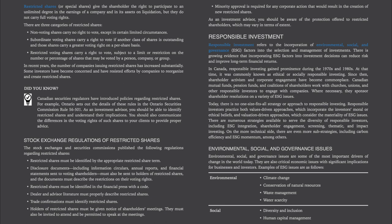Stock exchanges and securities commissions have published regulations regarding restricted shares. These include: restricted shares must be identified by the appropriate restricted share term; disclosure documents including information circulars, annual reports, and financial statements sent to voting shareholders must also be sent to holders of restricted shares and must describe restrictions on their voting rights; dealer and advisor literature must properly describe restricted shares; trade confirmations must identify restricted shares; holders of restricted shares must be given notice of shareholders' meetings and be permitted to speak at them; and minority approval is required for any corporate action that would result in the creation of new restricted shares.